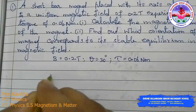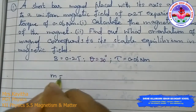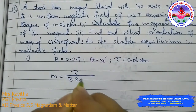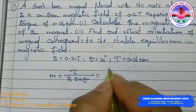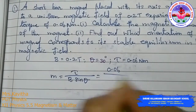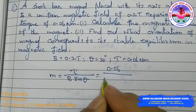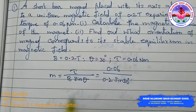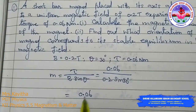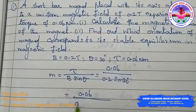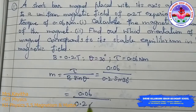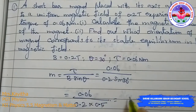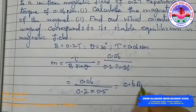The magnetic moment M is equal to tau divided by B sin theta. So M = 0.06 divided by 0.2 times sin 30 degrees, where sin 30 degrees = 0.5. Simplifying, we get M = 0.6 ampere meter square.